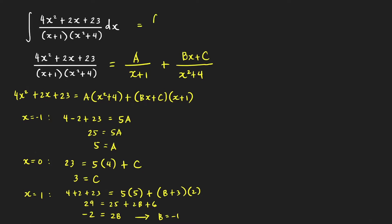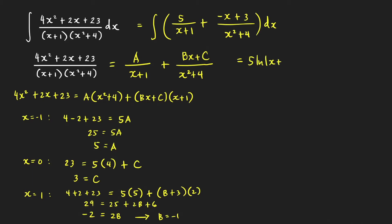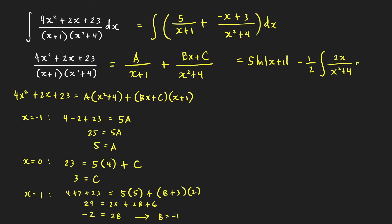Therefore we can write our integral as the integral of [5/(x + 1) + (−x + 3)/(x² + 4)] dx. The antiderivative of the first term is 5 ln|x + 1|. To integrate the second fraction we split it into two parts: −(1/2) times the integral of 2x/(x² + 4) dx, using u-substitution.